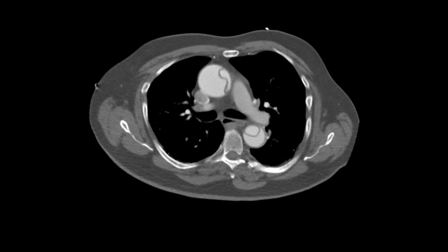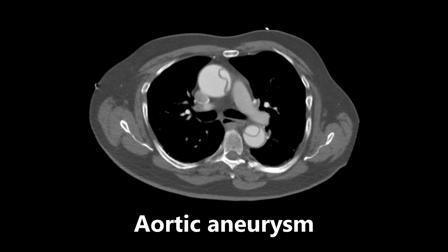This next image is a CT scan of a patient with an aortic aneurysm. The big thing that we're looking at here is this aorta. You can see the septum here that's dividing the true and false lumen of the aorta, and it's actually occurring both in the ascending and the descending aorta. So it's in both sides of the aorta here — a very high yield image to know.